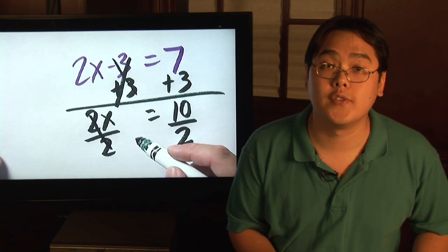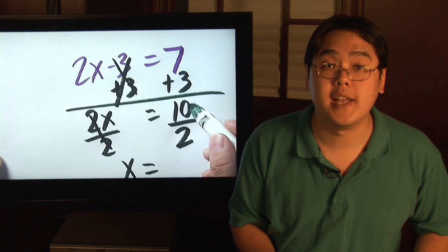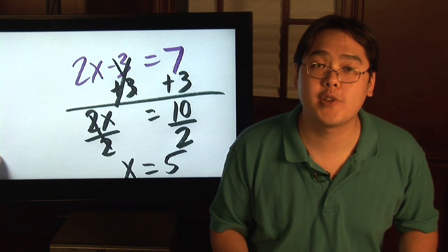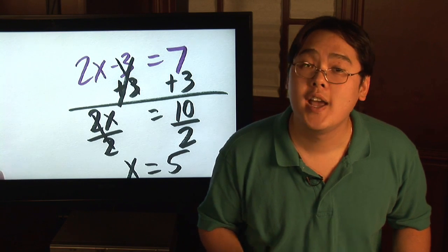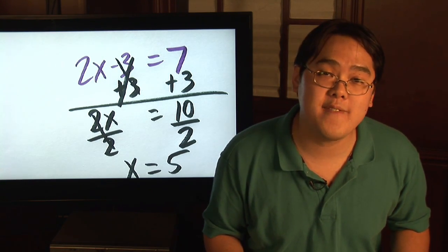2 divided by 2, that's going to give you 1. That's what you're looking for. So you have x equals 10 divided by 2, which is 5. So the missing number that you're looking for is 5. I'm Jimmy Chang and that's an introduction on solving an equation with a variable.